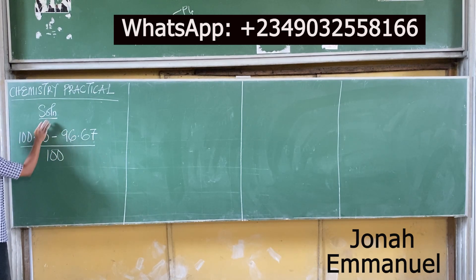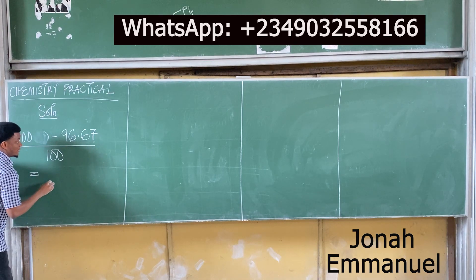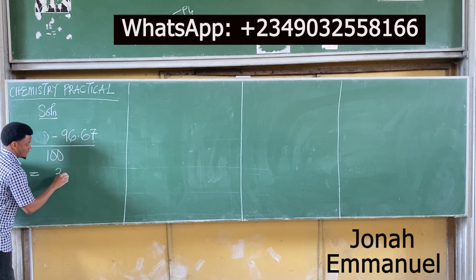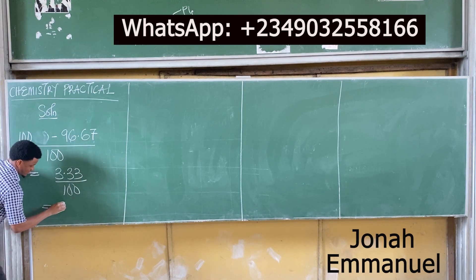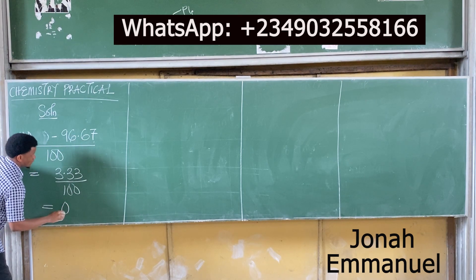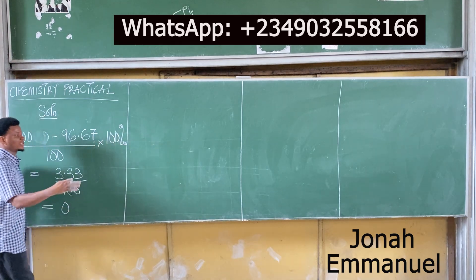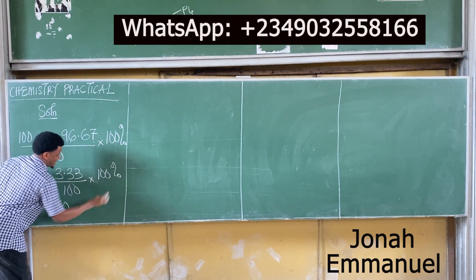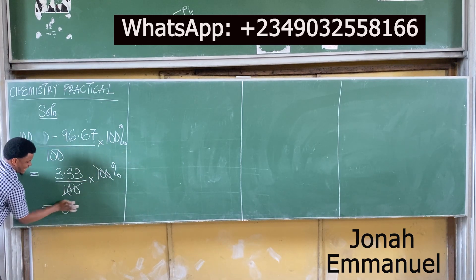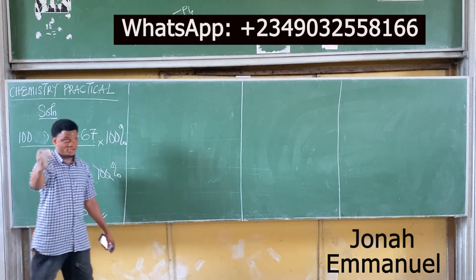We're looking for percentage error, so times 100%. That gives us 3.33 divided by 100, times 100% — the hundreds cancel. And that becomes 3.33%. Yes, thank you.